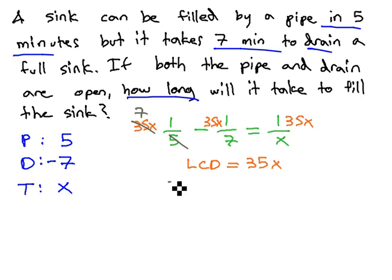Thirty-five over five is seven, so that leaves us seven x minus thirty-five over seven is five, five x. The x's divide out, so it equals thirty-five.